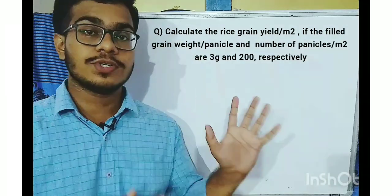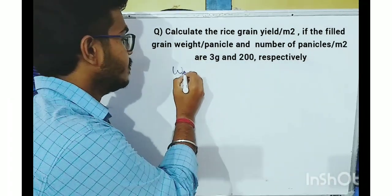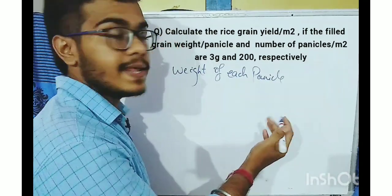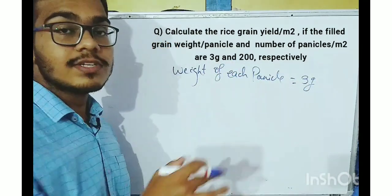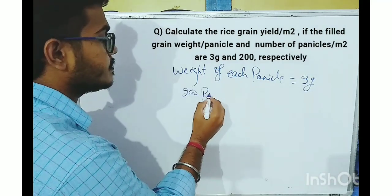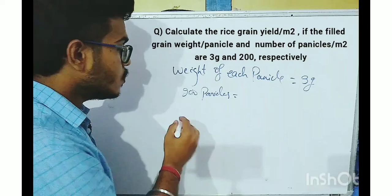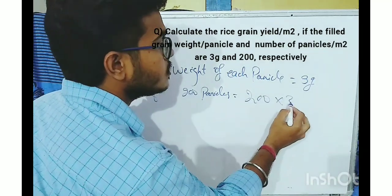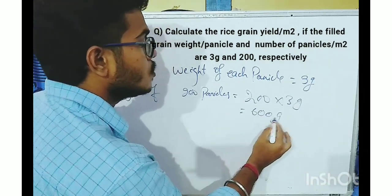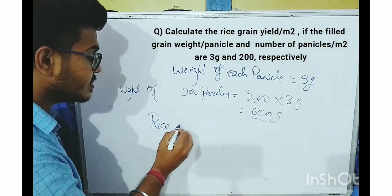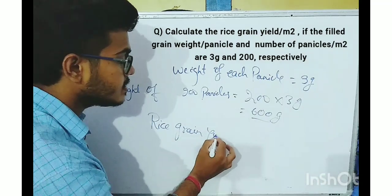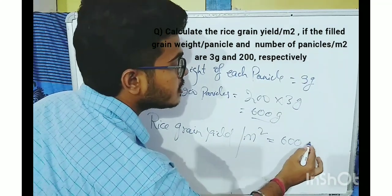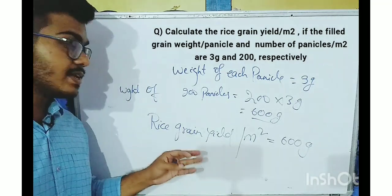For this question, the grain weight per panicle is 3 grams, and the total number of panicles is 200. So the weight of 200 panicles equals 200 × 3 grams = 600 grams. This calculation is for one square meter, so the rice grain yield per square meter is 600 grams.